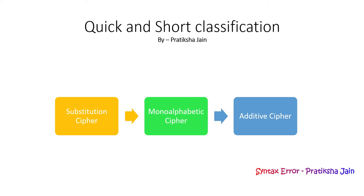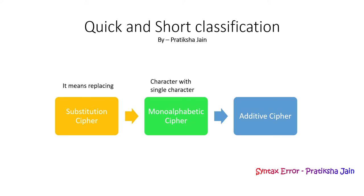Before going directly onto the code, I would like to explain what additive cipher is with an example. Let us look at a quick classification: additive cipher is classified under mono-alphabetic cipher, which is classified under substitution cipher, which is classified under stream cipher and symmetric key. Substitution means to replace something with another thing, and mono-alphabetic cipher means to replace a single character with another character.